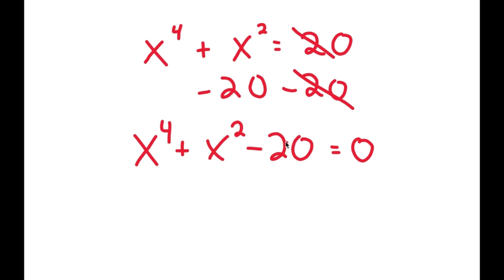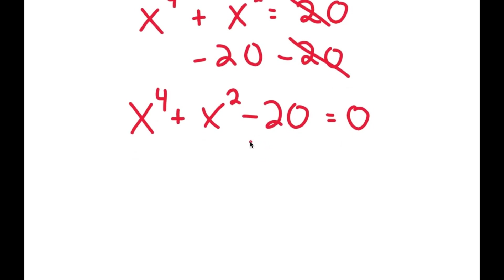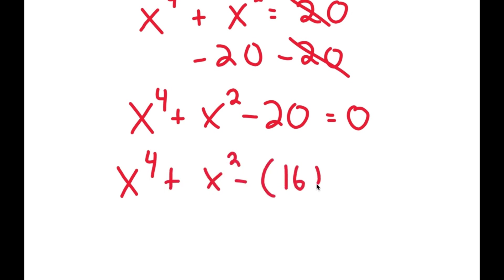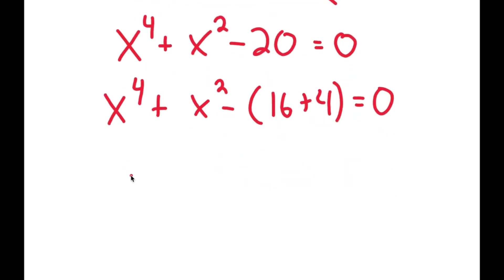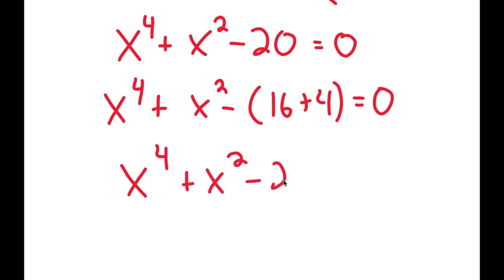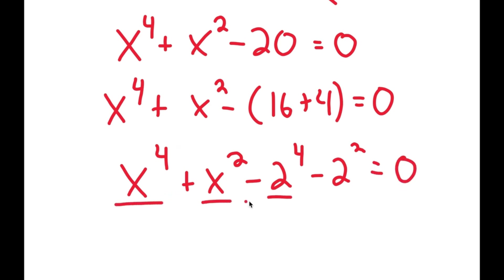We can't factor this out by using the quadratic formula because this is not a quadratic equation. So to solve this, what I want to do is rewrite this as x to the power of 4 plus x squared minus 16 plus 4. I rewrote 20 as 16 plus 4, and the reason I did this is because negative 16 is the same thing as negative 2 to the power of 4, and negative 4 is the same thing as negative 2 squared. So now notice how I have something in the power of 4 and something in the power of 2, and they're both the same.